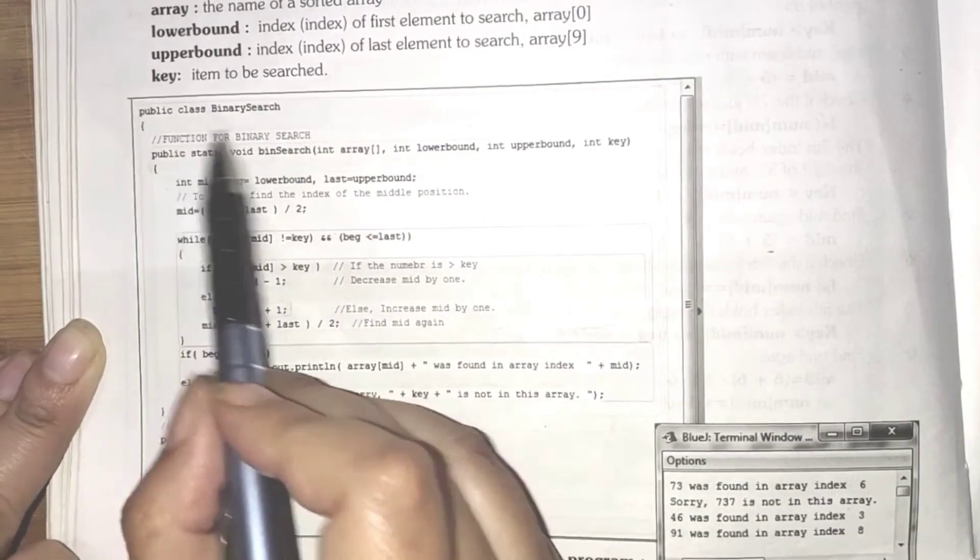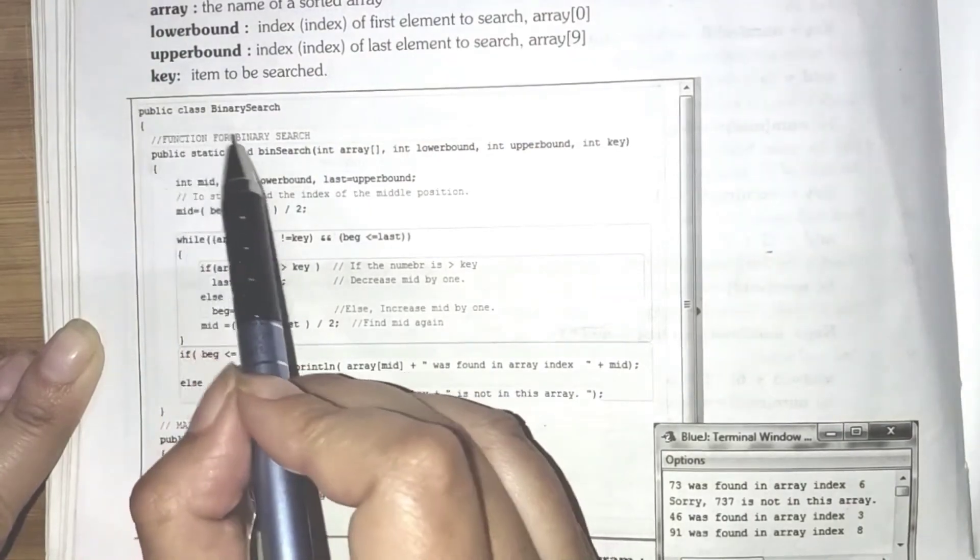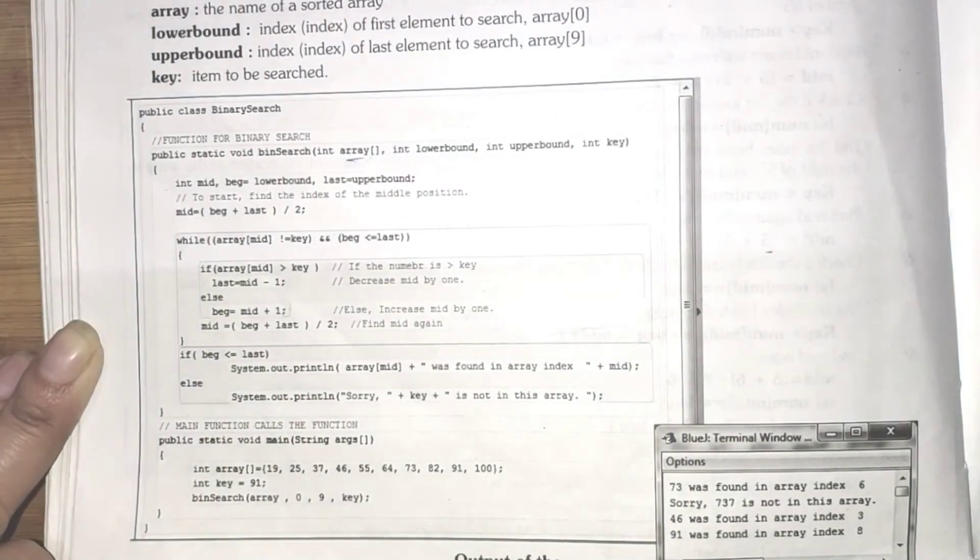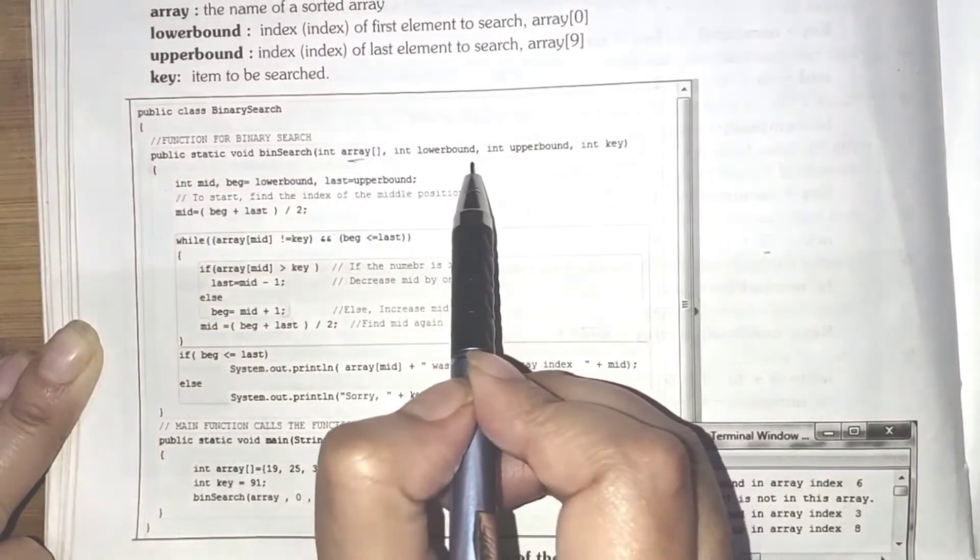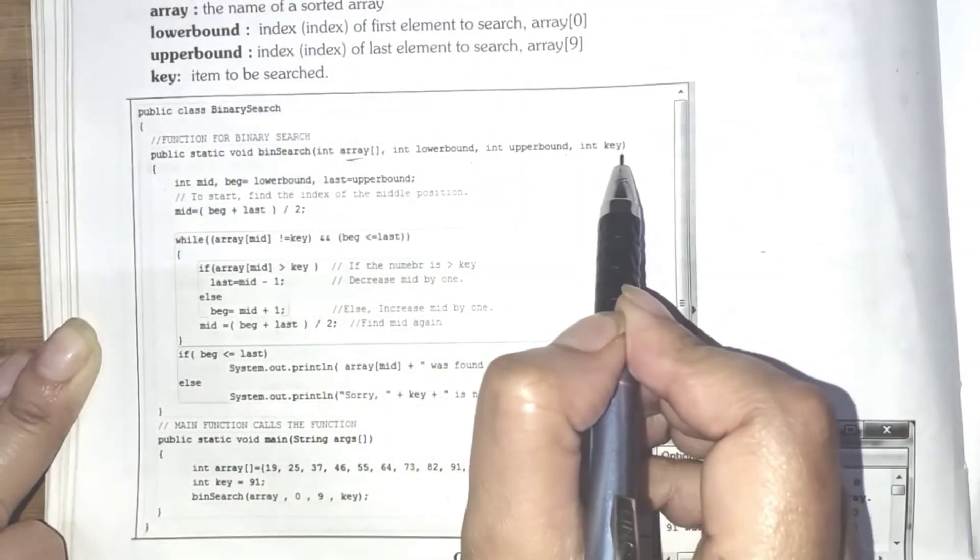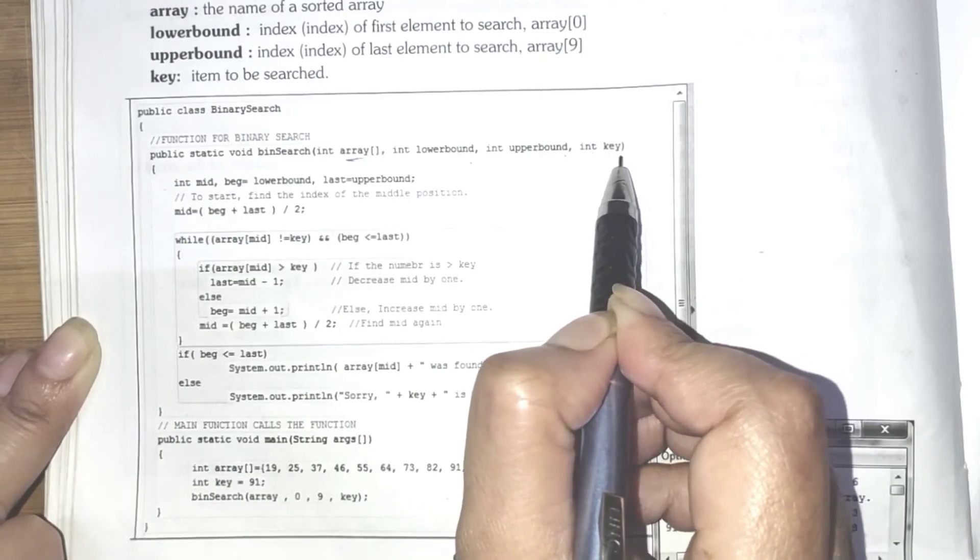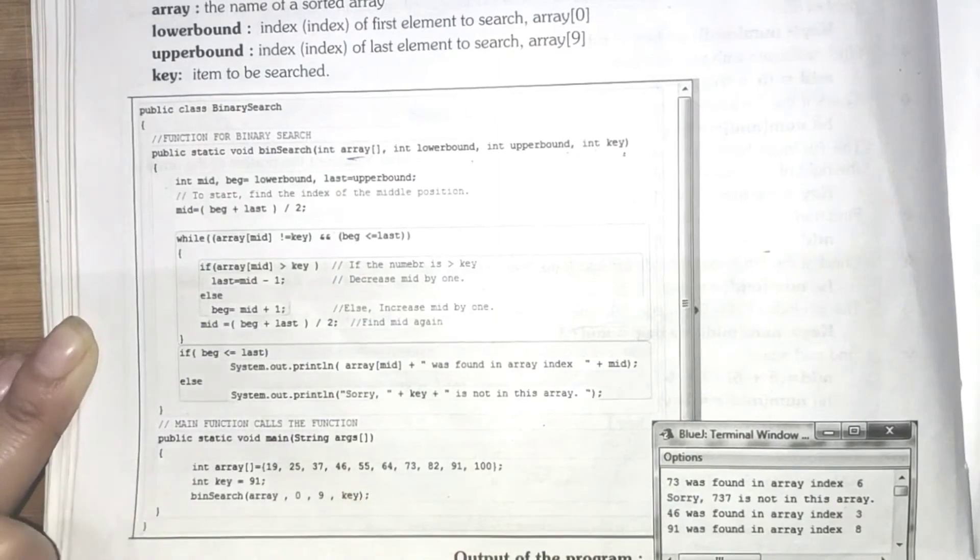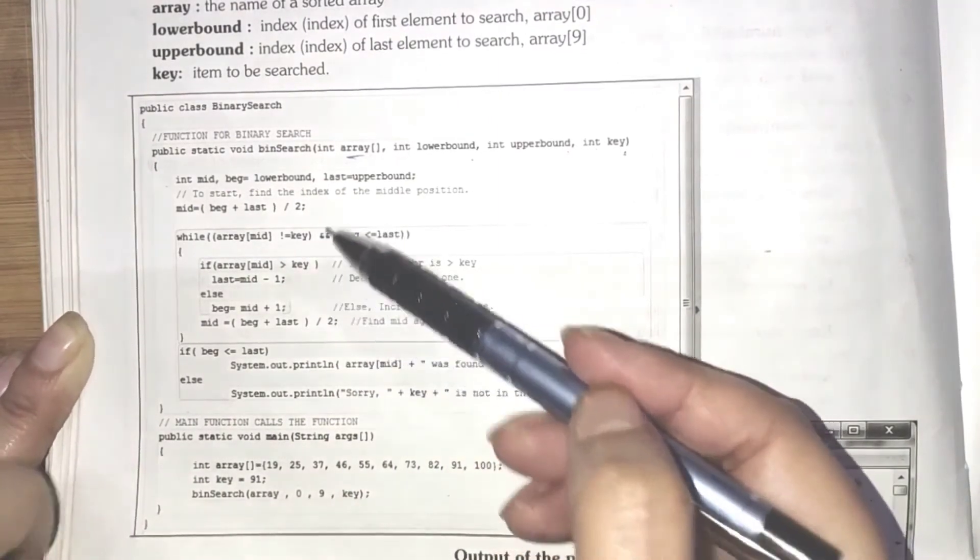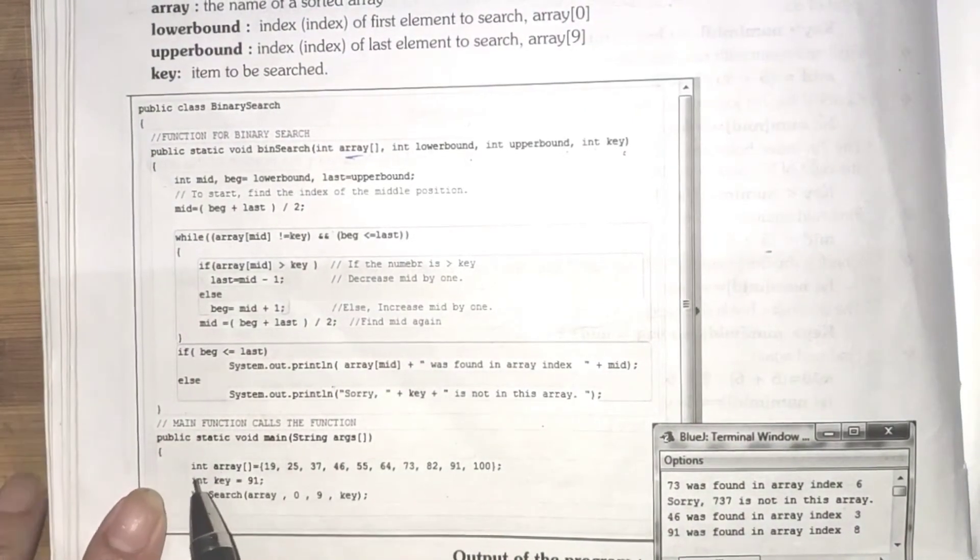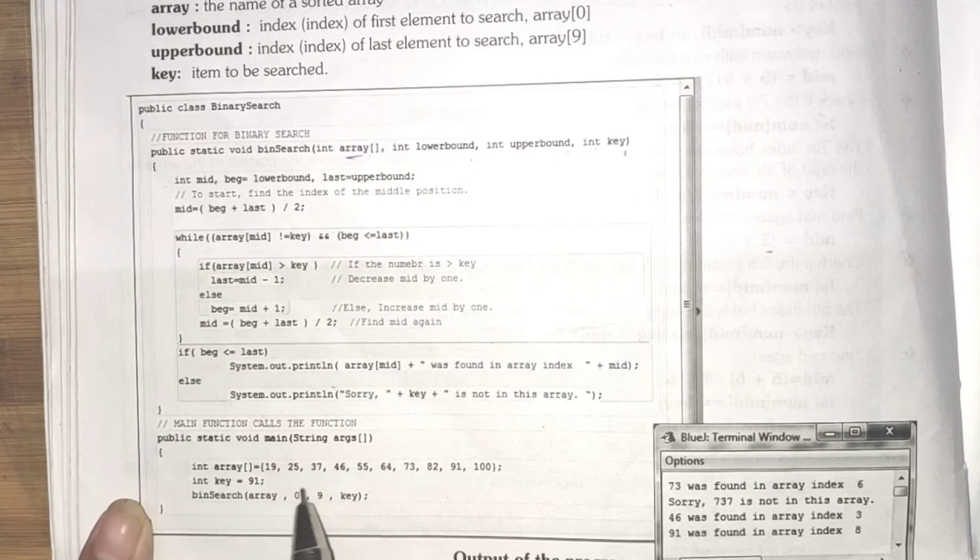Let's understand with the help of this programming section. Here, the class is binary search and array list is going to be saved in the array variable. Lower bound is your lowest item and upper bound is your upper item. Int key is going to be used to search a particular item. Here, the same coding which I had explained you, the same, almost same coding is given here. And in the end, in the main function,